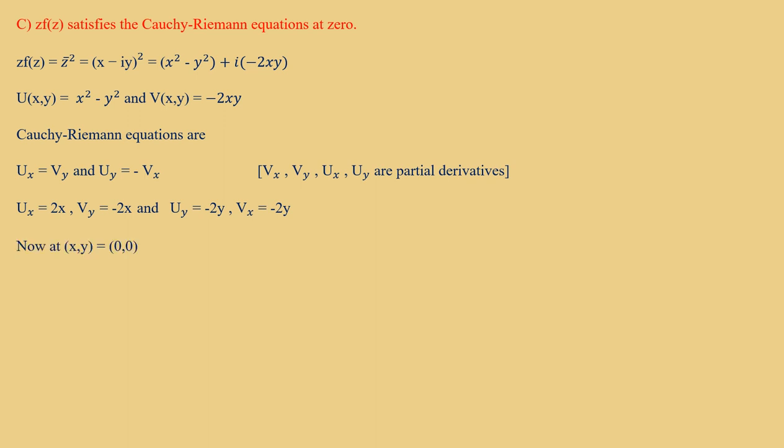We check the Cauchy-Riemann equations at (0, 0). At (x, y) = (0, 0): u_x = v_y = 0 and u_y = −v_x = 0. Therefore the equations are satisfied at the origin, and Option C is also true.